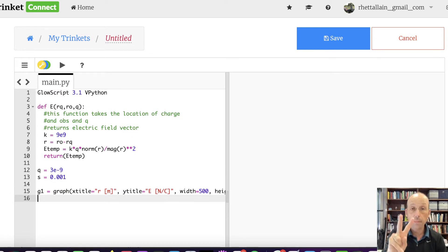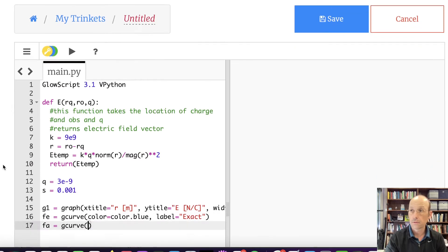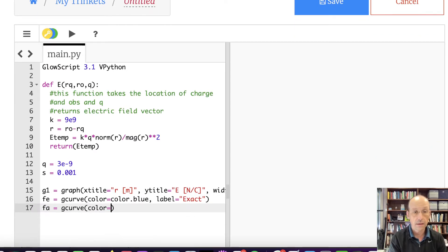Now I need two graphs, I'm going to make two curves. Let's call it Fe for exact, the exact value of the electric field, gcurve, color equals color.blue, and let's give it a label, label equals 'Exact'. Fa for approximation is also going to be a gcurve, color equals color.red, label equals 'Far Field', and that's the far field approximation.